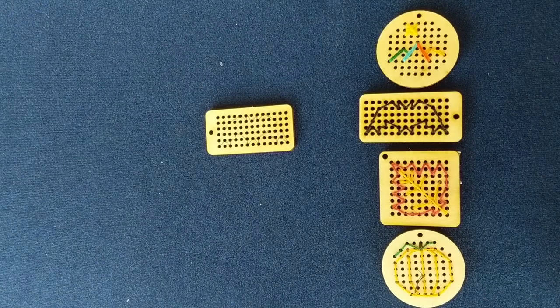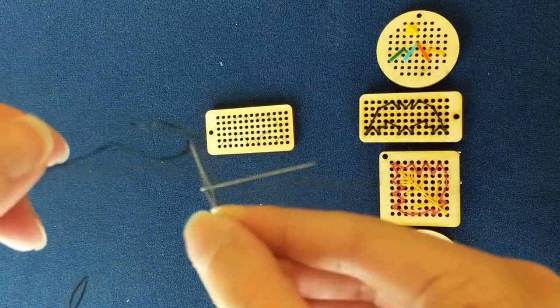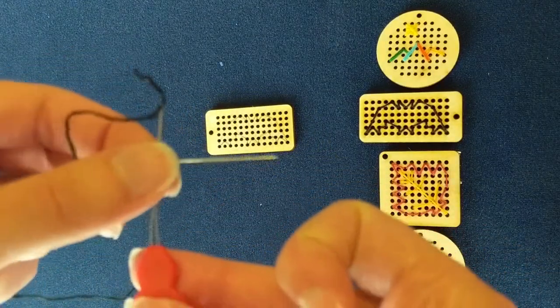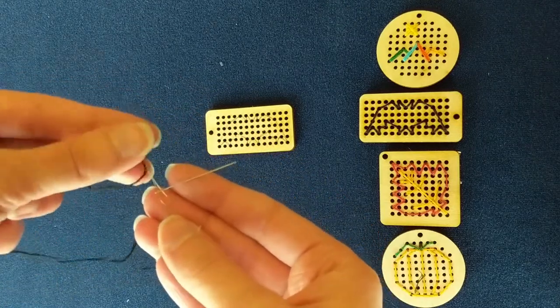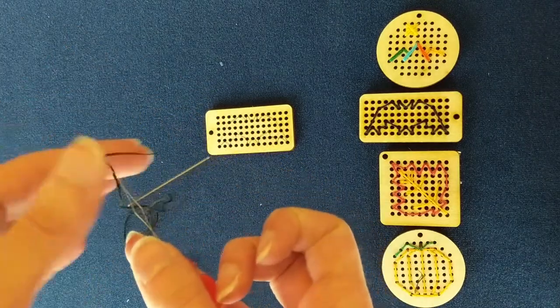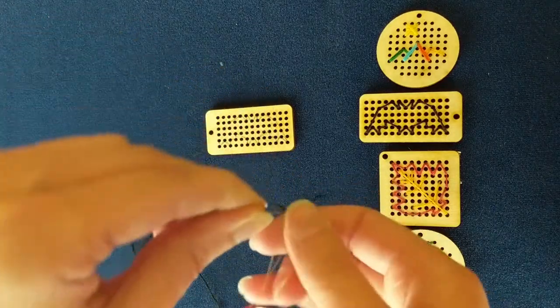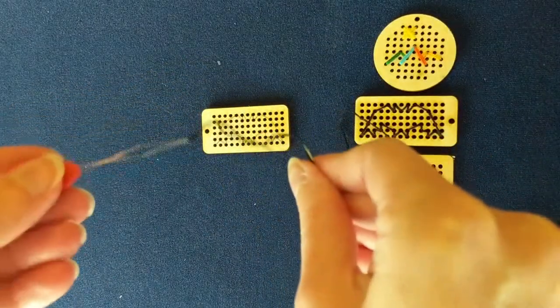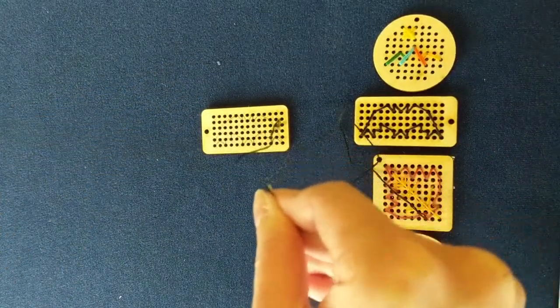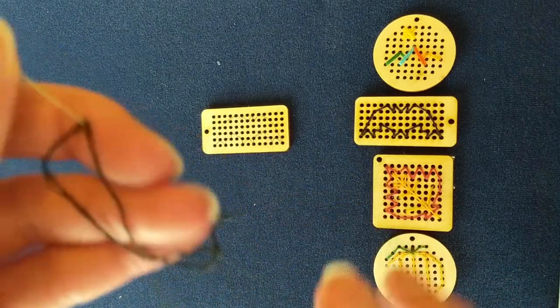So to show you that, you can see here we have got our needle threader going through the eye of our needle, and then we've got our thread going through the needle threader which has a much bigger hole as you can see. So then we just pull the needle threader through the eye. And so once you've pulled it through, just remove the needle threader, set it aside, and you will have a threaded needle.